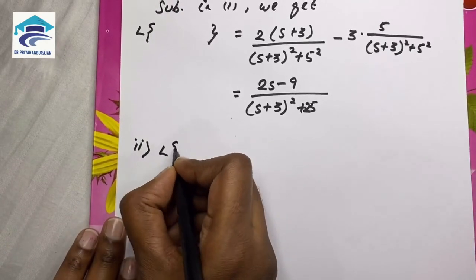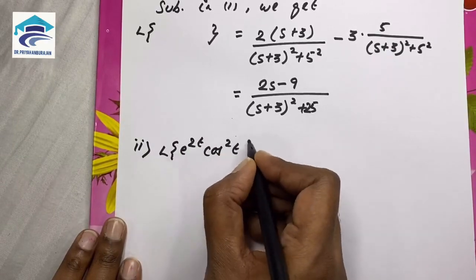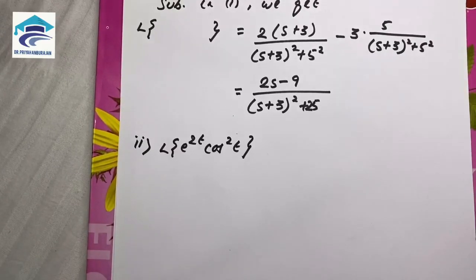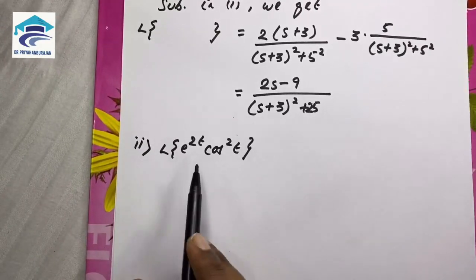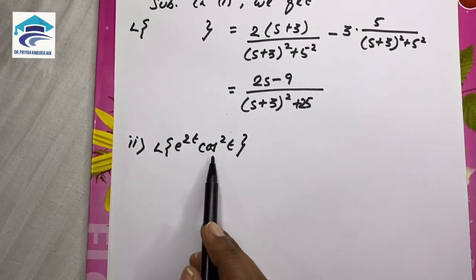Next problem is L of e power 2t cos squared t. You don't have the combination formula for exponential and cos squared.